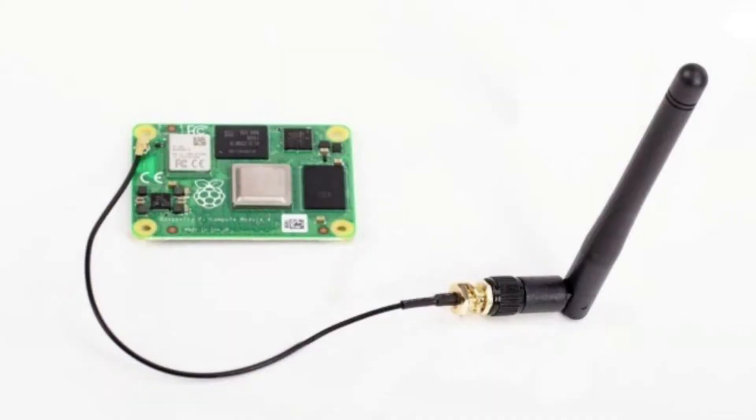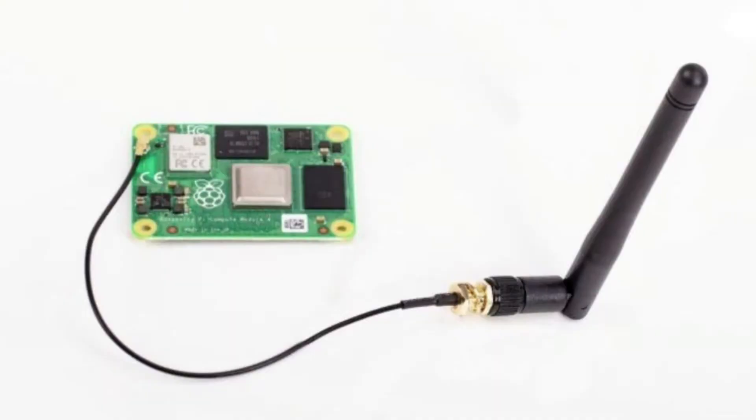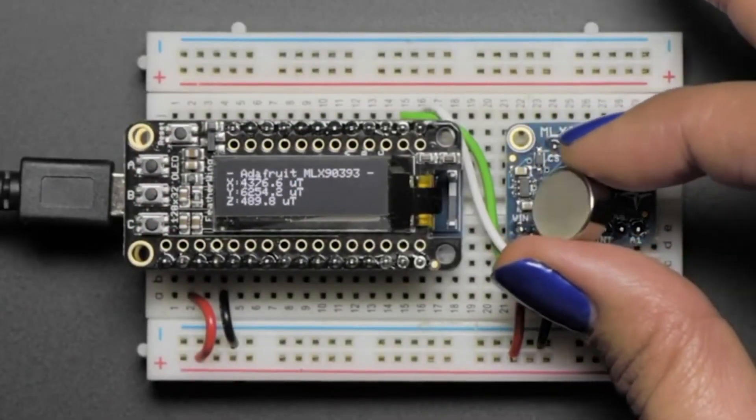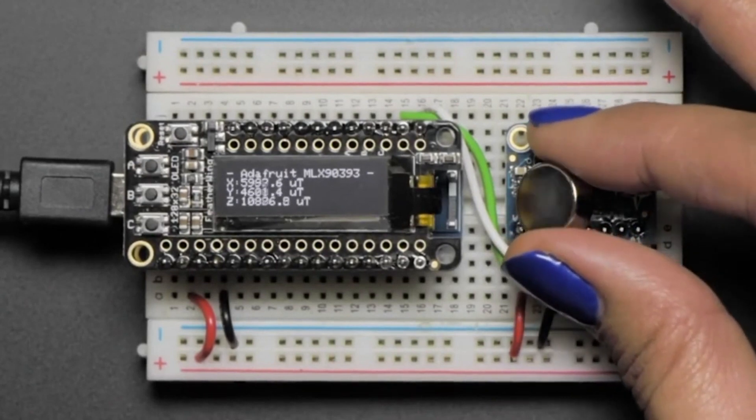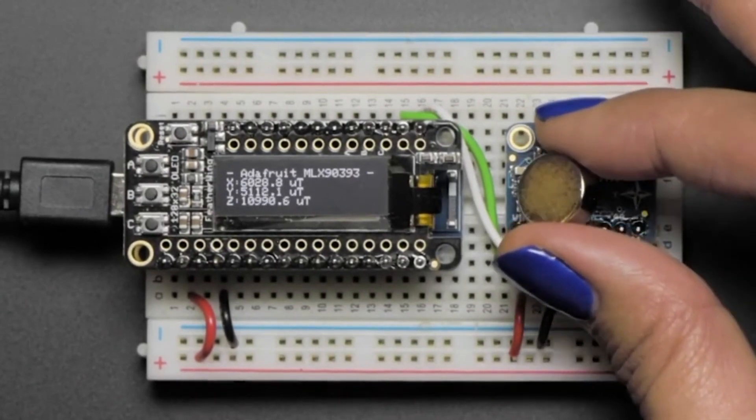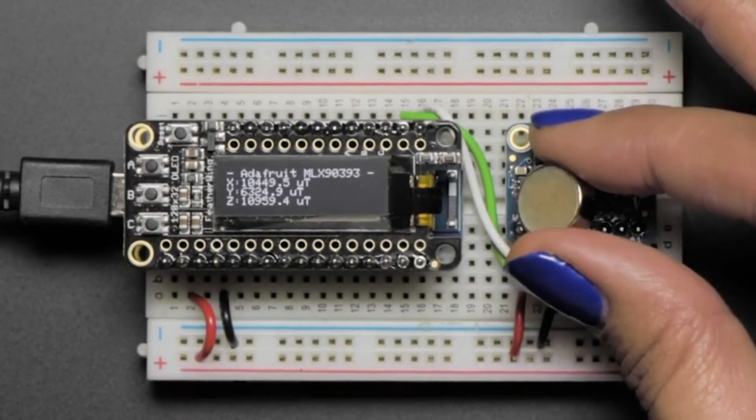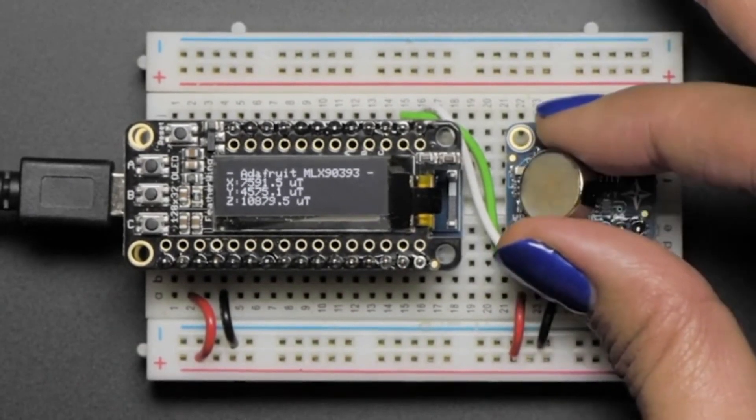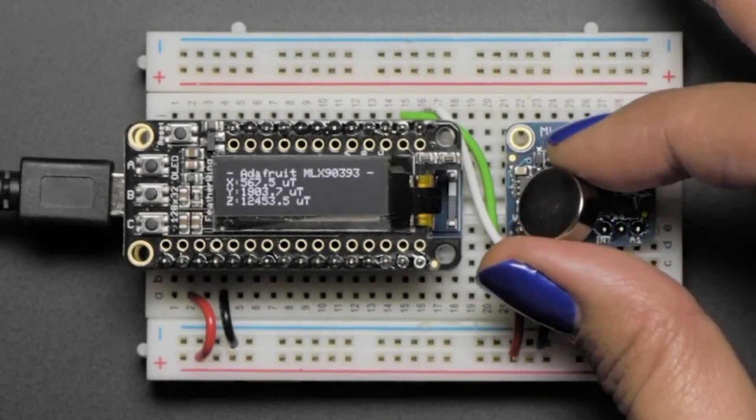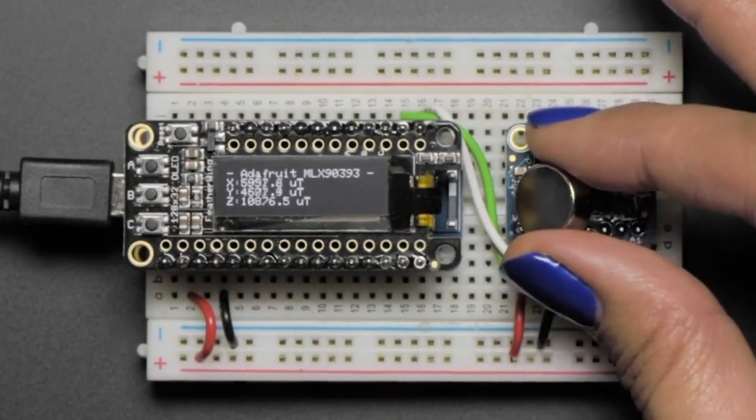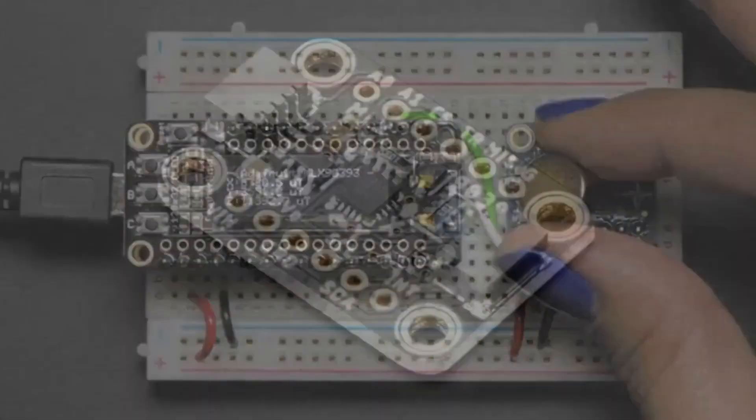Next up we have a STEMMA QT update. This is the MLX 9393, one of our favorite high powered magnetometers. As shown here, it's good with magnets, it's not good for detecting the magnetic fields of the earth but it's really good for detecting the magnetic field of magnets which are really powerful. It goes up to 50 microtesla.